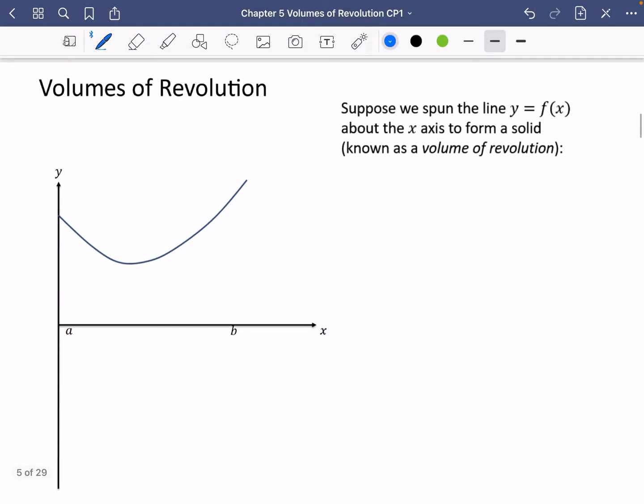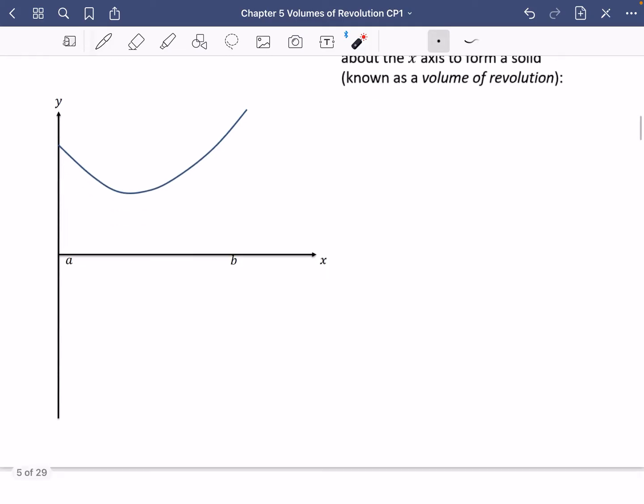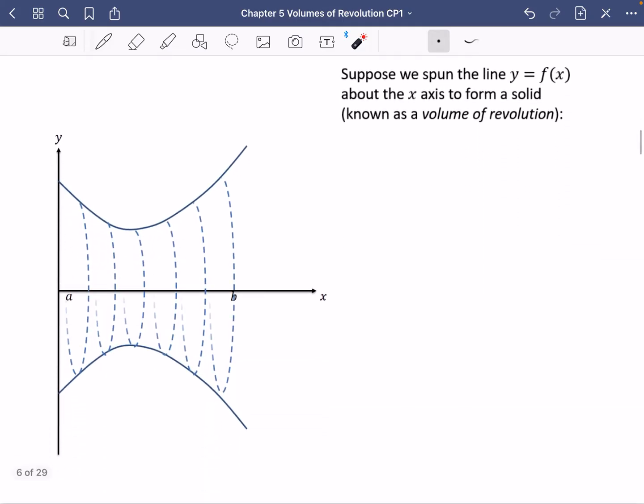So when we're talking about volumes of revolution, what we're going to be supposing is that we spin this line, y equals f of x, about the x-axis to form a solid. And this is known as a volume of revolution. So my next few slides are going to kind of show what's happening. So you can see how this f of x line has kind of spun partly around here. It's kind of come down to the bottom and it's spinning around in this kind of direction.